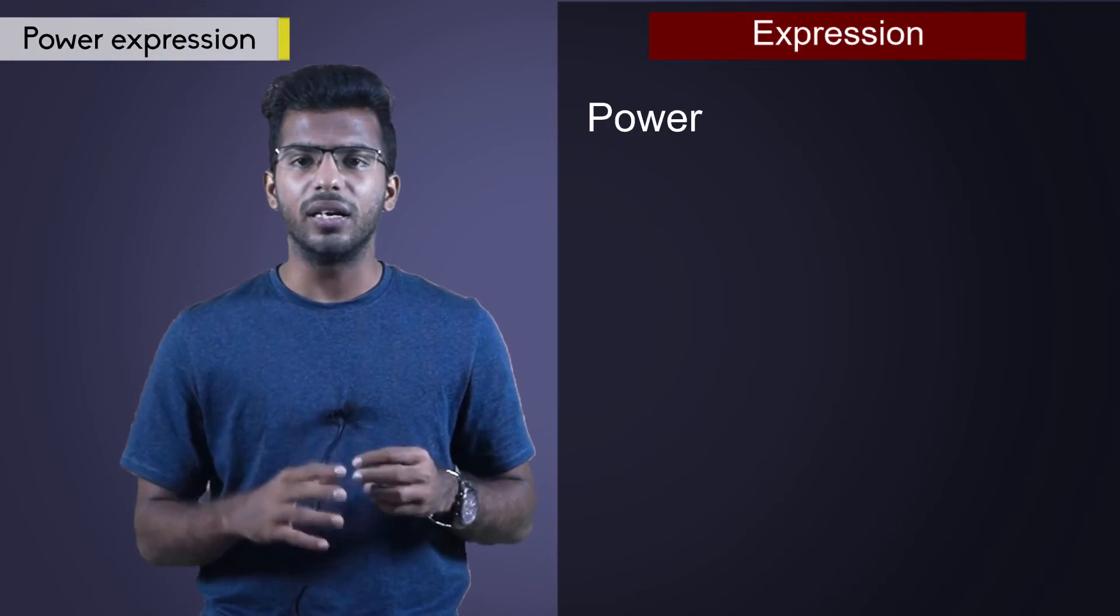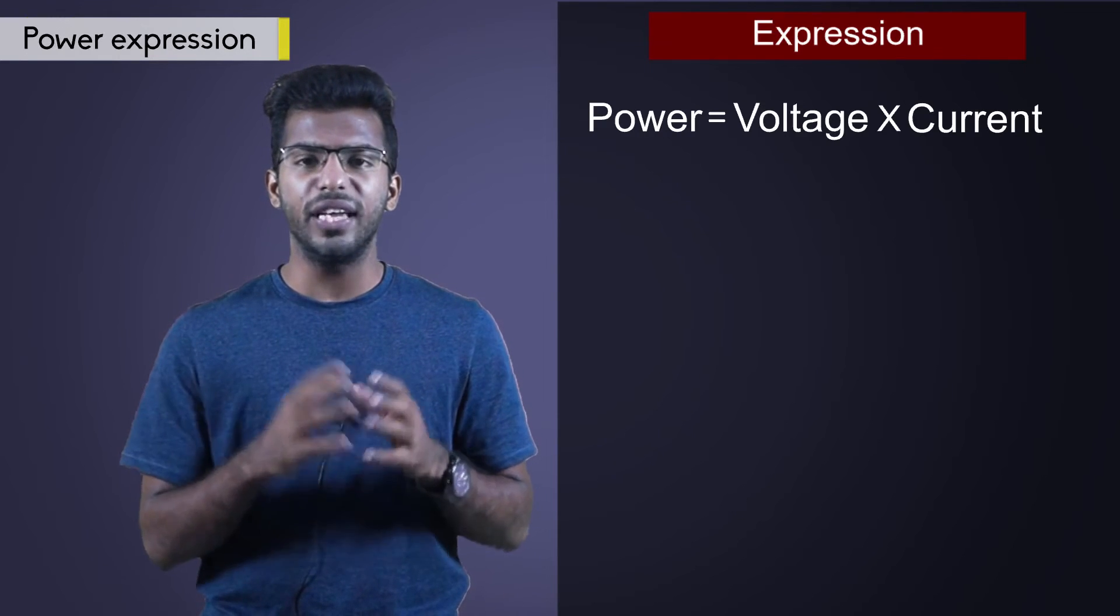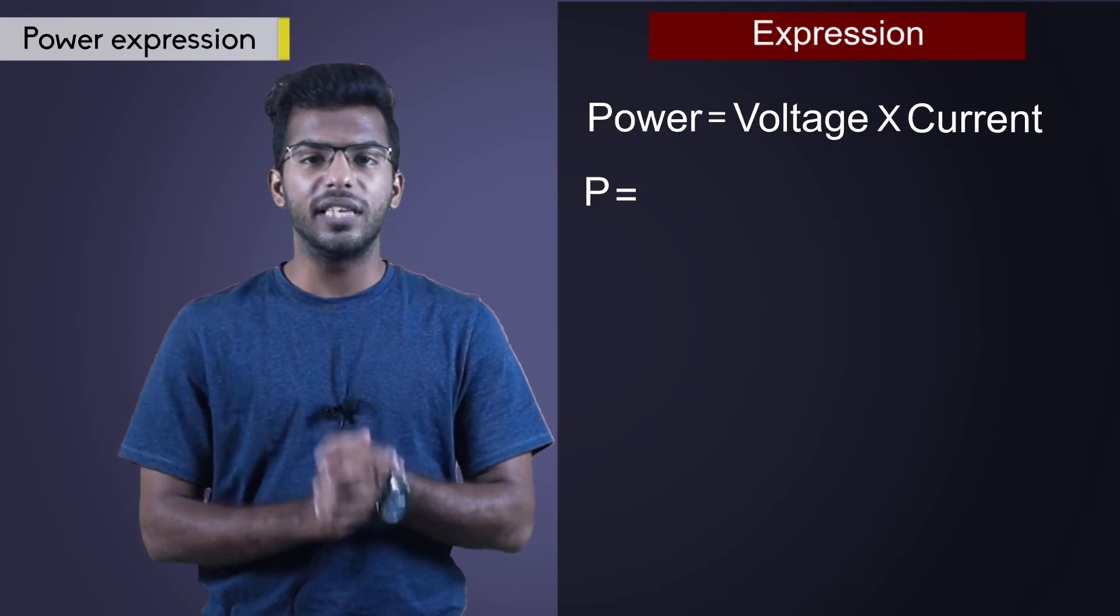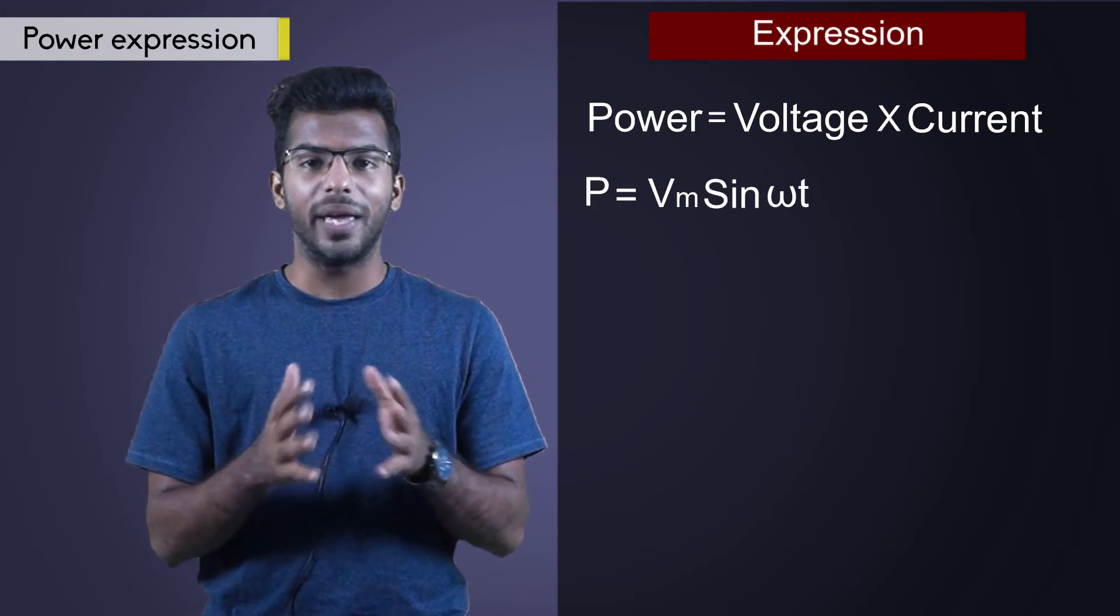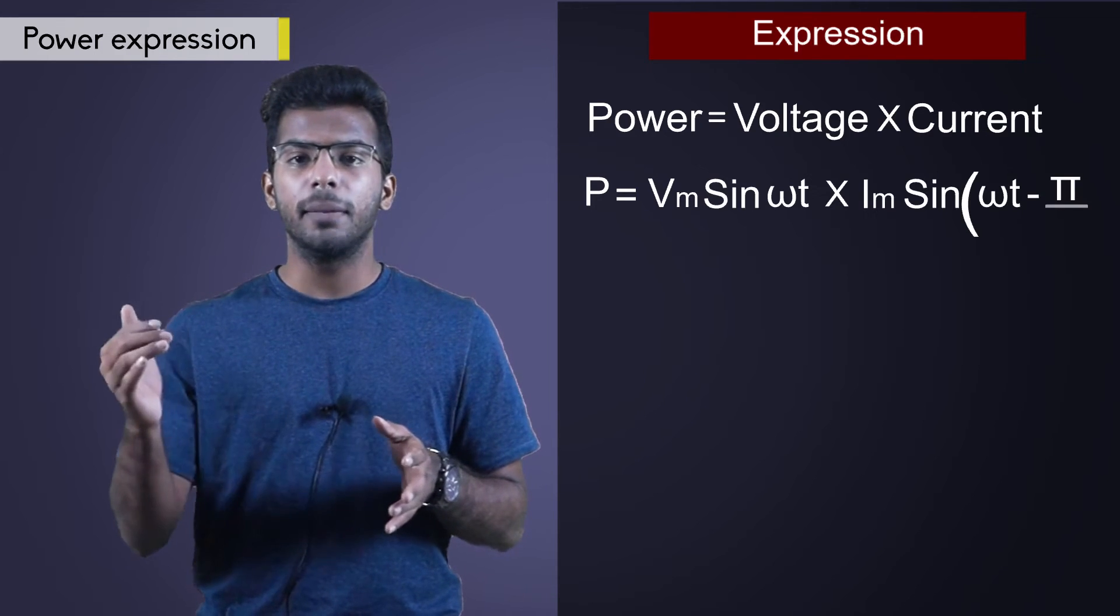Now, the last thing we need to learn is about power. Power is equal to V into I. Substituting the V and I values, P is equal to Vm sin omega t into Im sin omega t minus pi by 2.